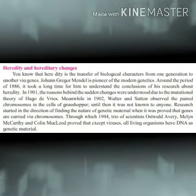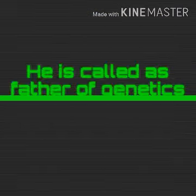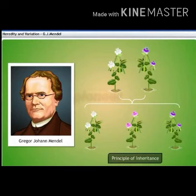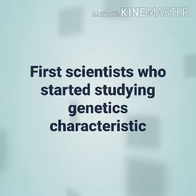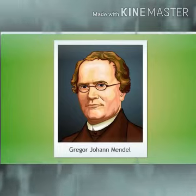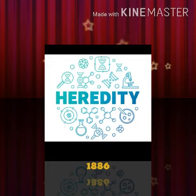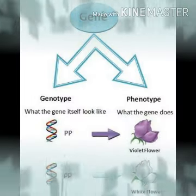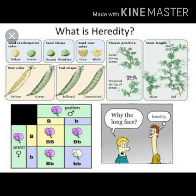Now let us see the list of scientists who have done research in the world of genetics. The first one is Gregor Johan Mendel. He is the father of genetics, also called the pioneer of modern genetics — meaning the first scientist who started studying the characteristics of genes. His research was done during the period of 1856 and includes genotypic and phenotypic characteristics of plants, for example, tallness and roughness of pea plants, and color and shape of pea plants.